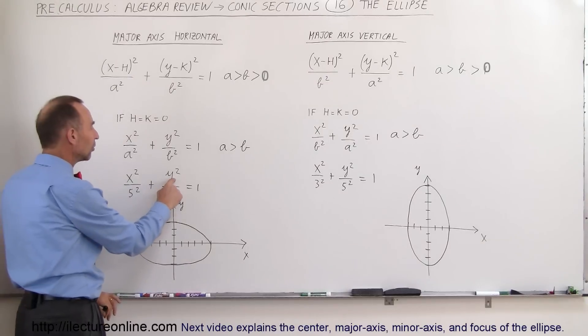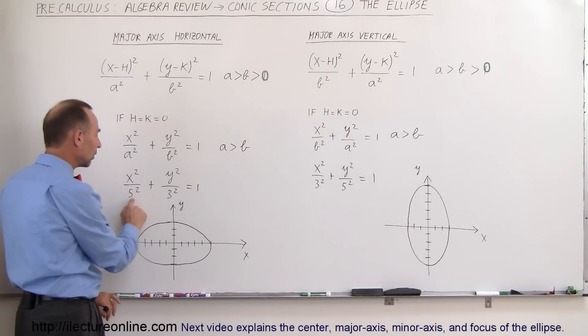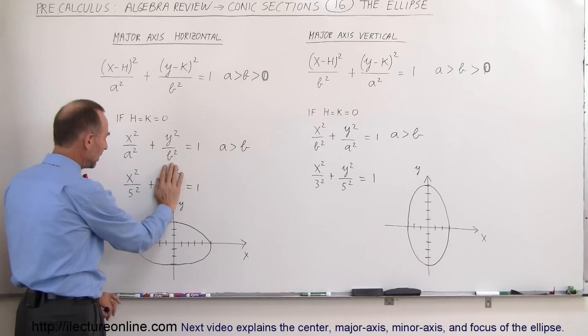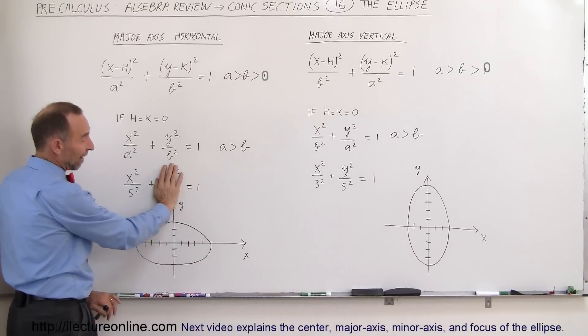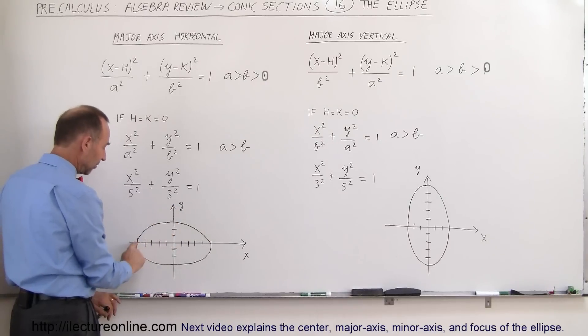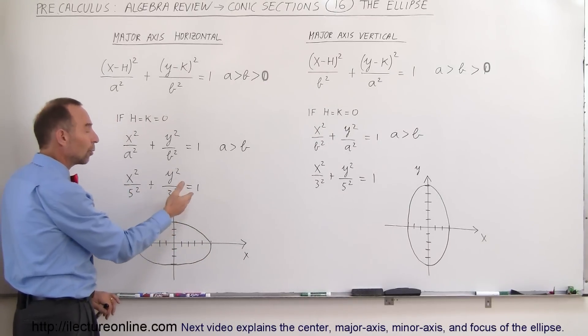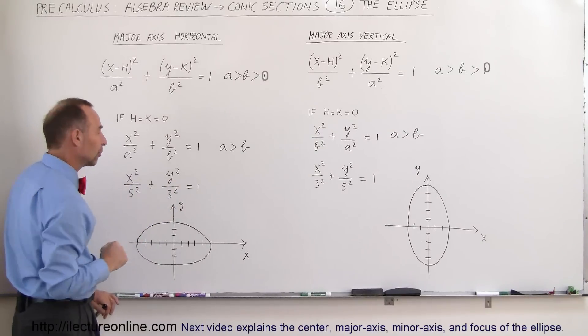Notice that when y is equal to 0, that would be on the x-axis, then x²/5² = 1. If this goes away, then x² equals 5². If you put 5² over there and x equals 5, that means when y equals 0, x is negative 5 and positive 5. Because when you have x² equals 5², then x would be the plus or minus the square root.